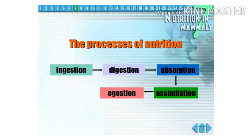Nutrition in human beings occurs in the following steps. Number 1, ingestion. Number 2, digestion. Number 3, absorption. Number 4, assimilation. And number 5 is egestion. In some books, it is written that absorption and assimilation are combined into one step, that is absorption. So we can treat it as a four-step process or we can count it as a five-step process.